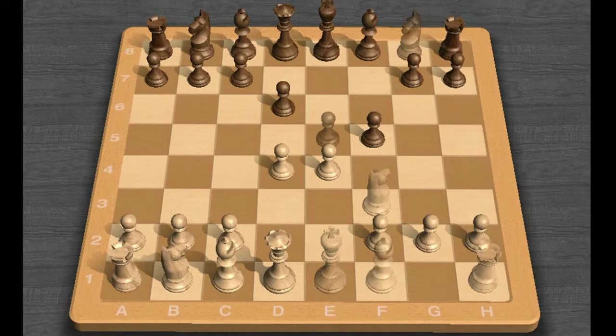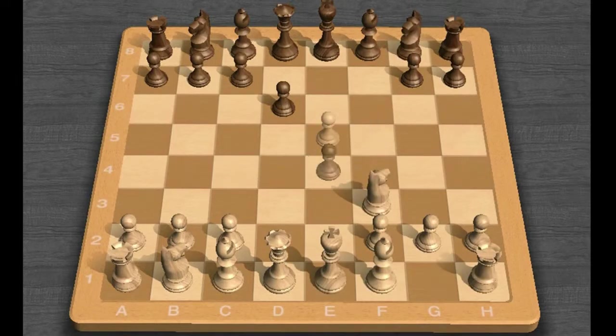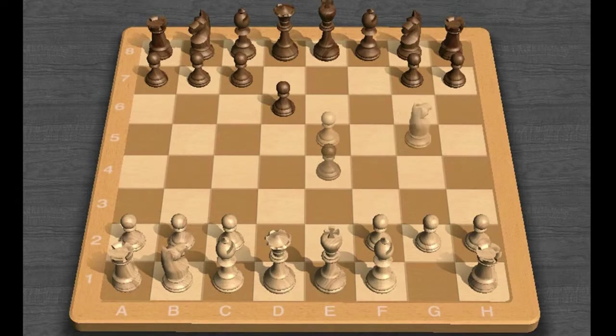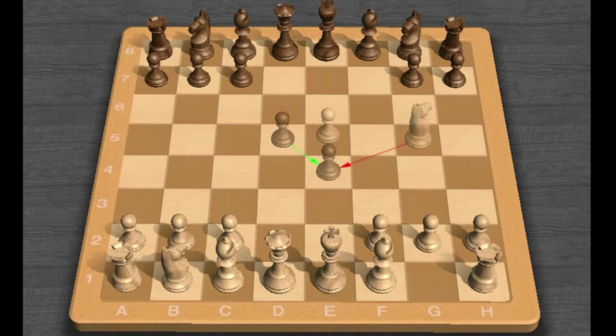Another way to do it would be D captures E5, F captures E4, Knight G5 attacking that pawn on E4, D5, and then E6.